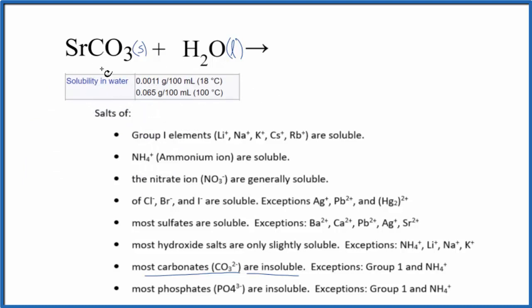So to show that, we could break this up into its ions. The little bit that dissolves would split into the strontium 2 plus, and then this whole carbonate ion is 2 minus. So we'd end up with Sr2 plus, the strontium ion, plus we'd have the carbonate ion, CO3 2 minus.